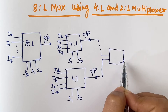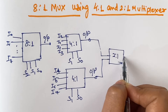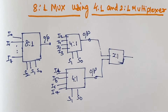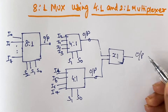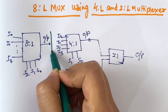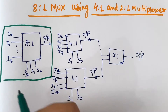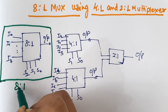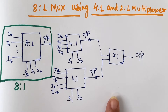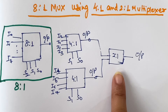We then take one 2-to-1 multiplexer to combine the two outputs, giving us the final output. This complete circuit is an 8-to-1 multiplexer, implemented using two 4-to-1 multiplexers and one 2-to-1 multiplexer.